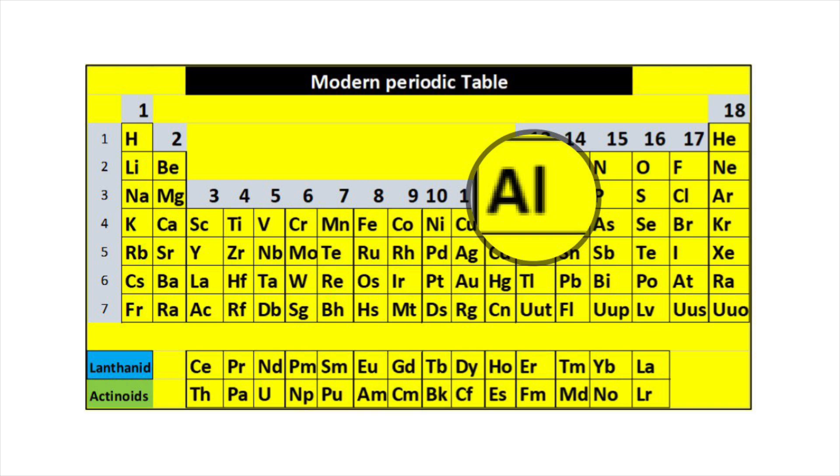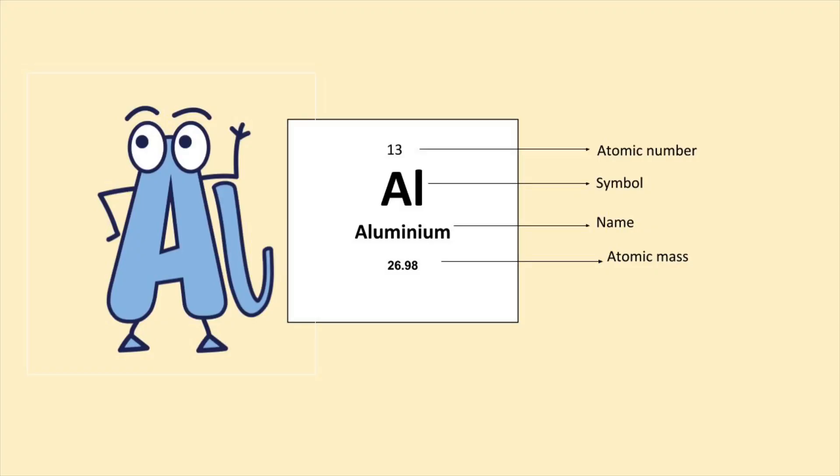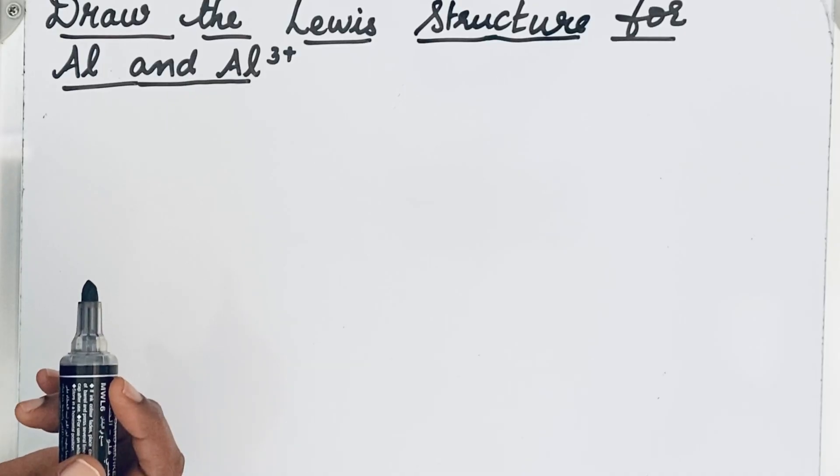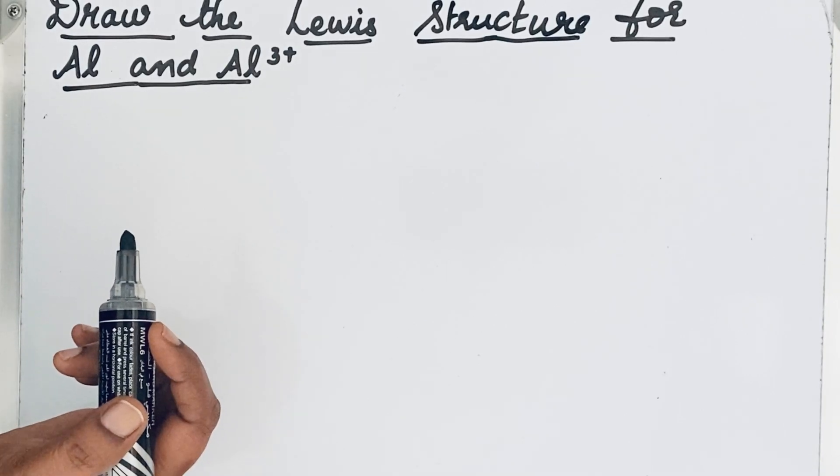Welcome to Aurora Chemistry for Everyone. In this video, let us see how to write Lewis structure for an atom and its ion. Let us take aluminium and aluminium ions and we will see how to write a Lewis structure.